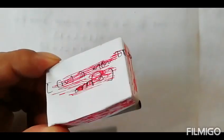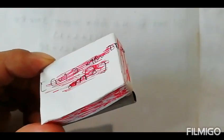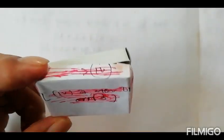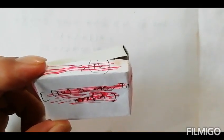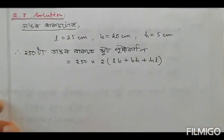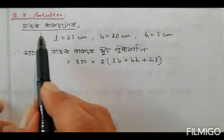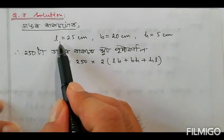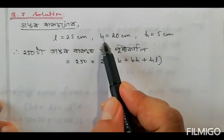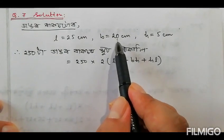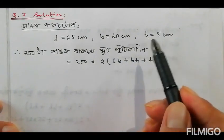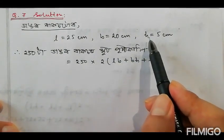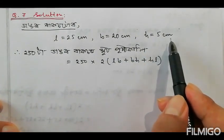This question is interesting, students. It's actually very simple and easy to solve. So for the larger box: l = 25 cm, b (breadth) = 20 cm, h (height) = 5 cm.